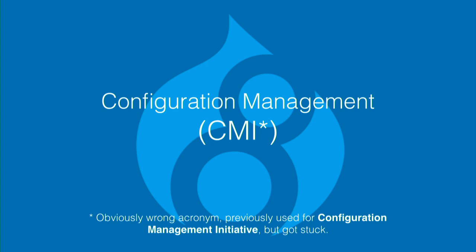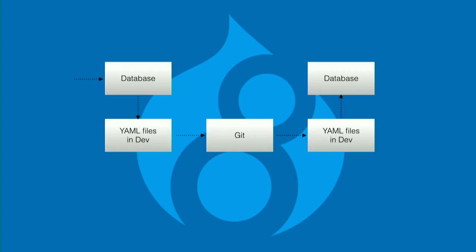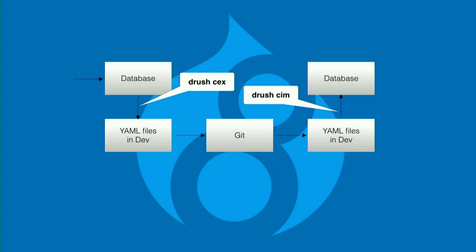Because now we have Configuration Management, or CMI. CMI allows you to do stuff in the database, export YAML files, add those YAML files to Git, push them, and then import them. Who uses CMI already? Wow, awesome. And of course we have Drush, which helps a lot with config export and config import. Finally, we don't have a problem with reverting features and whatever. So it's awesome.